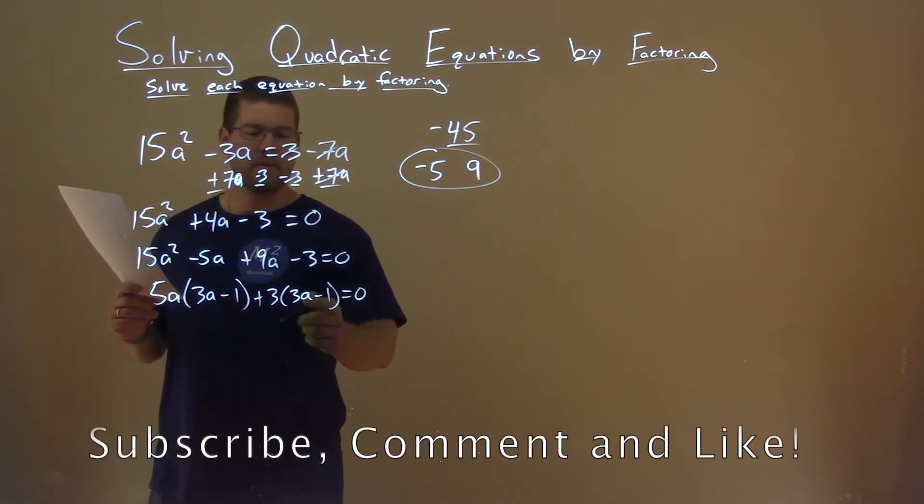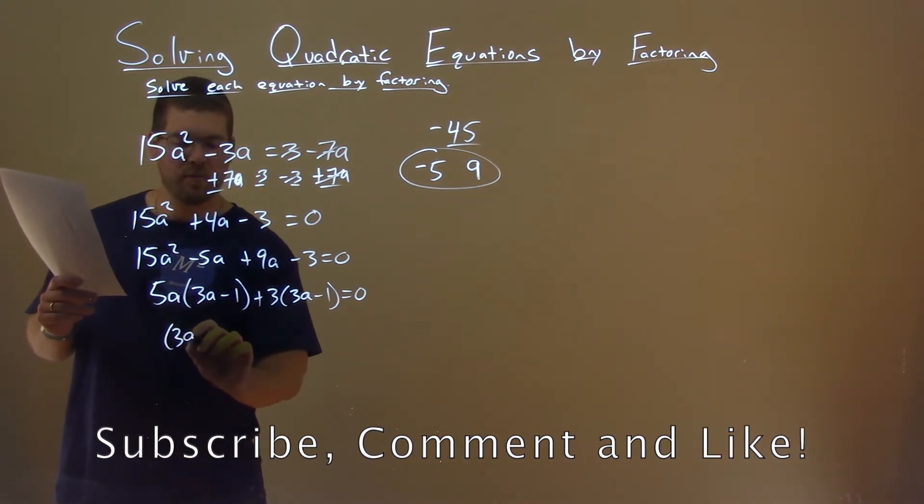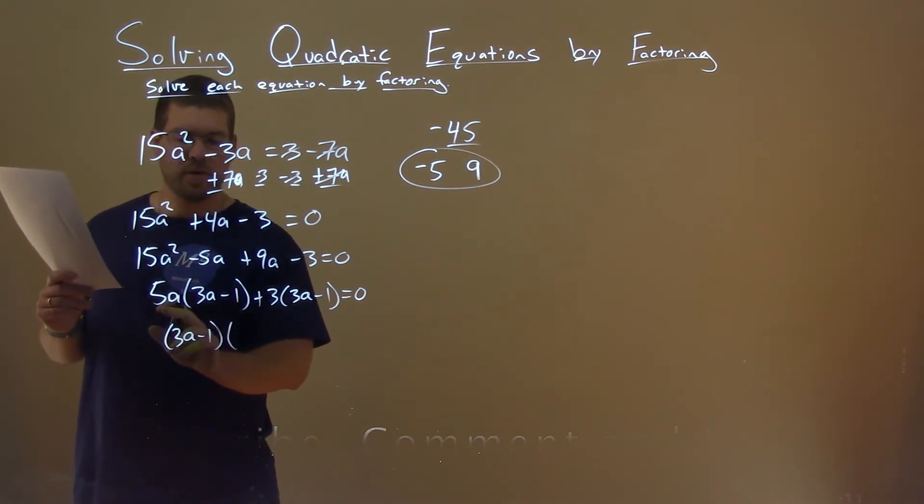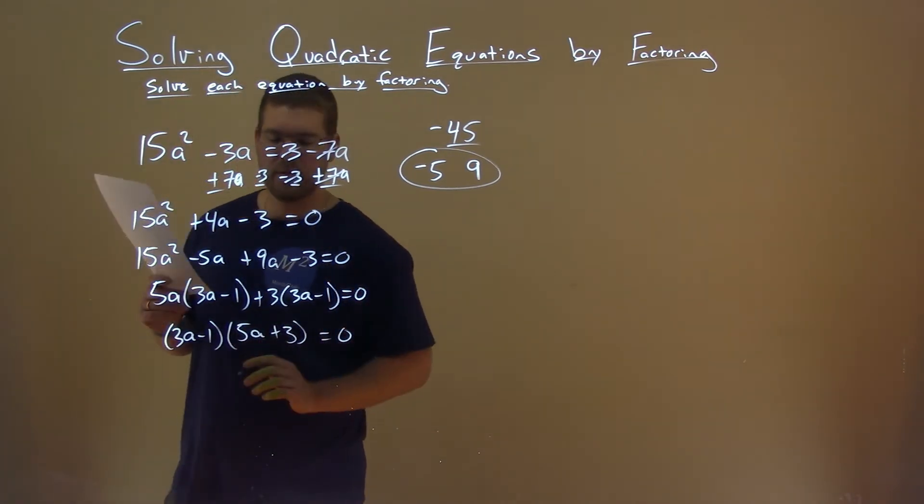Notice, 3a - 1 and 3a - 1. Pull that out from both parts. I have 3a - 1 here, and now it's being multiplied by 5a plus 3, and that equals 0.